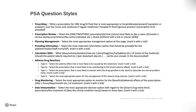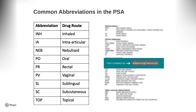You should familiarize yourself with abbreviations used in the PSA, most of which will be familiar to you already. These include drug routes such as INH for inhaled, IA for intra-articular, NEB for nebulized, PO for orally, PR for rectal, SL for sublingual, SC for subcutaneous, TOP for topical, and PV for vaginal.